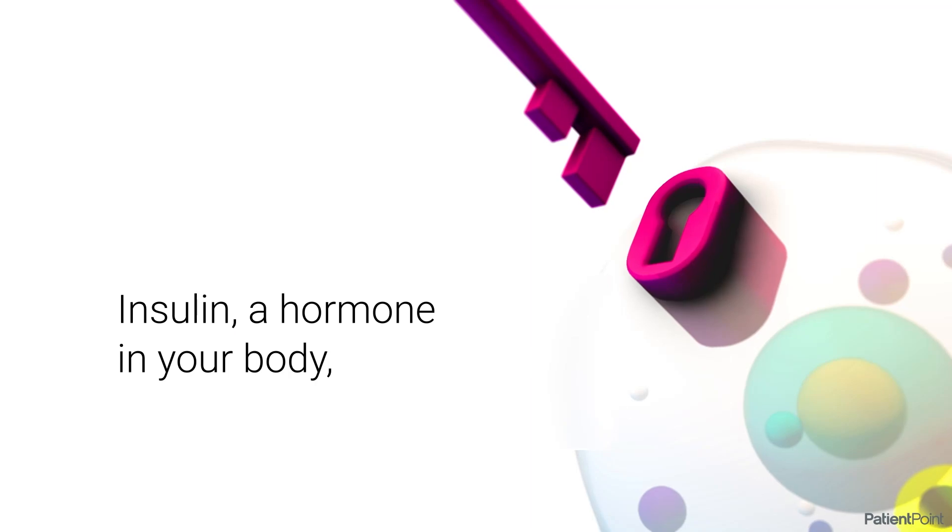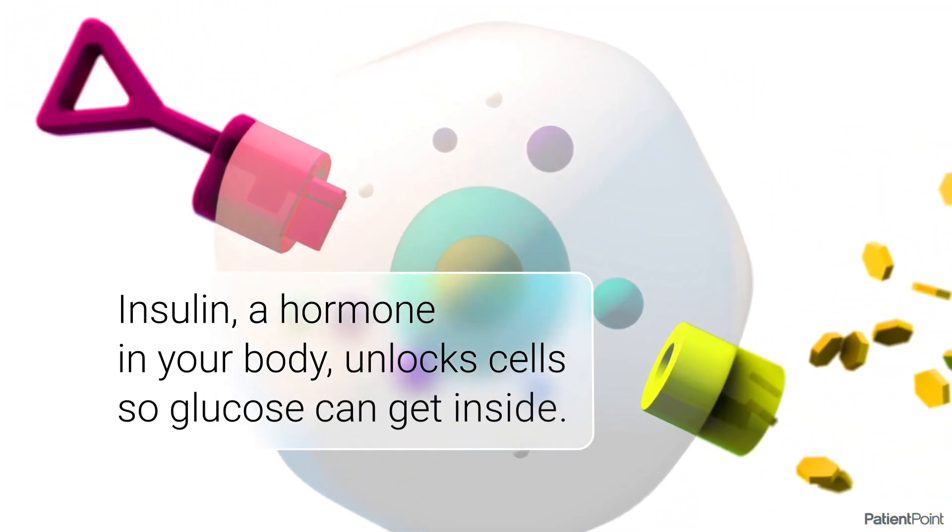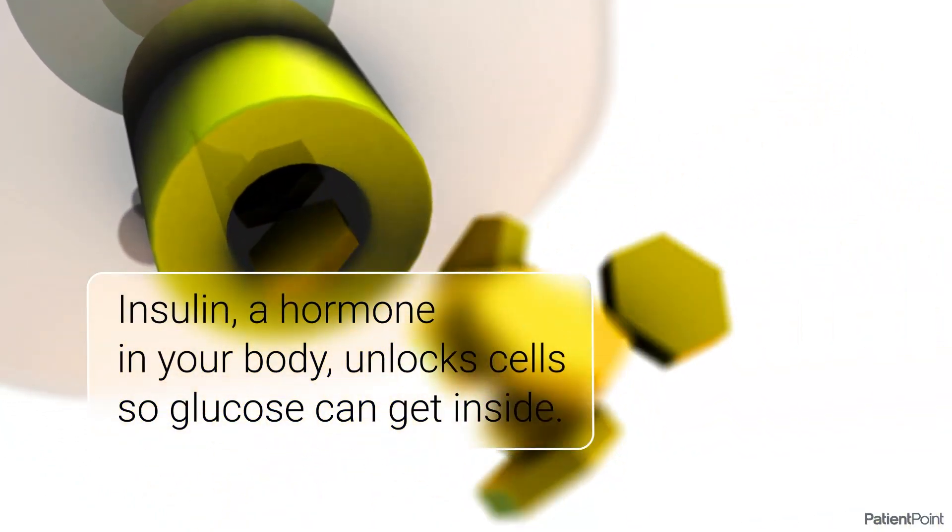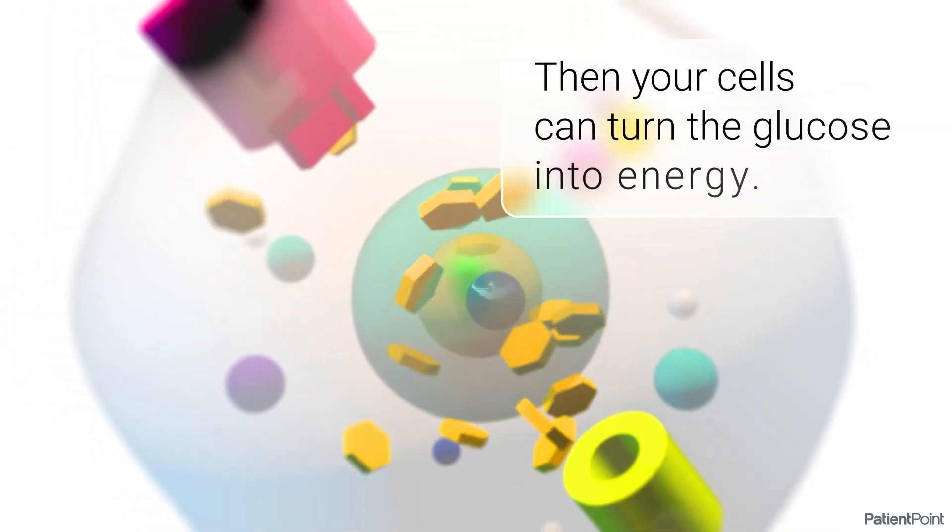Insulin, a hormone in your body, unlocks cells so glucose can get inside. Then, your cells can turn the glucose into energy.